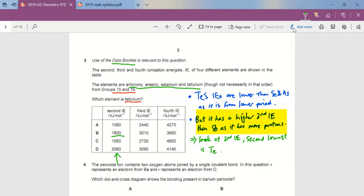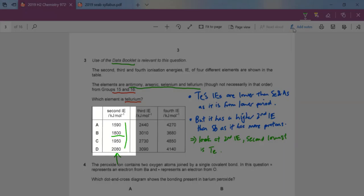So here we look through the whole list of second IE and you realize that D is your answer, the lowest second lowest value.